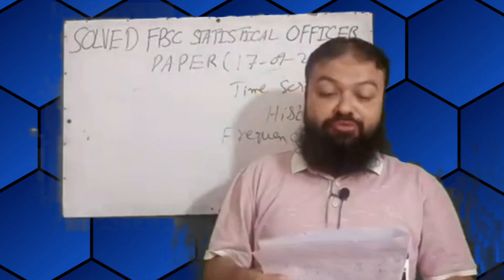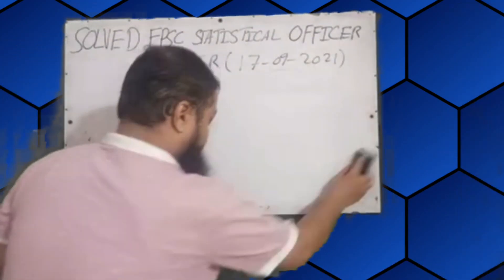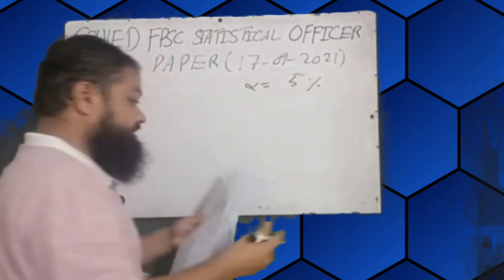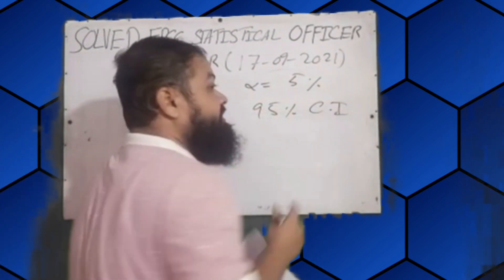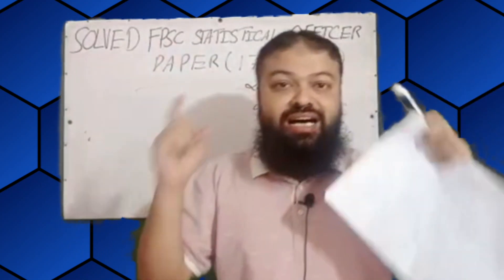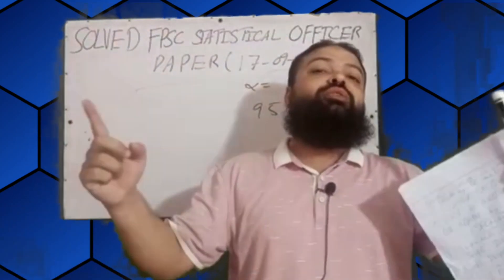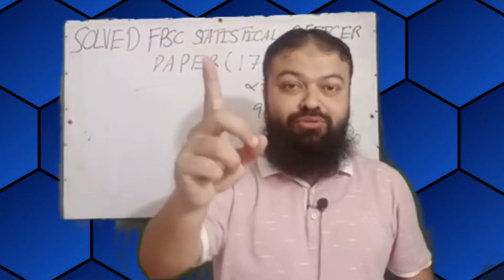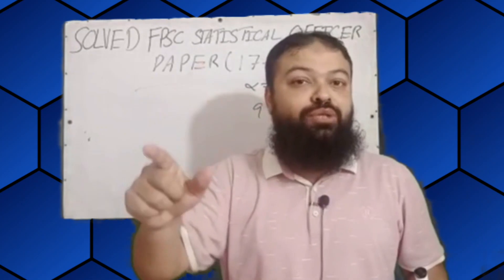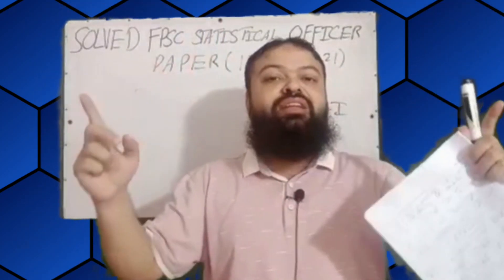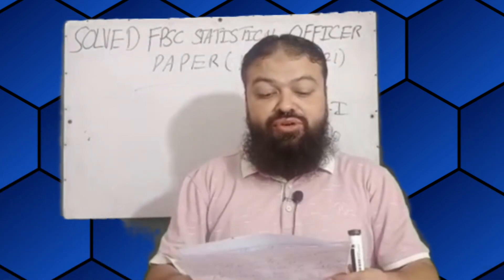Question number thirteen: if we have an alpha level of significance of 5 percent, then what percentage confidence interval do we have? We have a 95 percent confidence interval. We are 95 percent sure that the value of the population parameter, which can be mu or p, lies within the interval calculated from the sample observations. 95 percent confidence interval is the correct option.